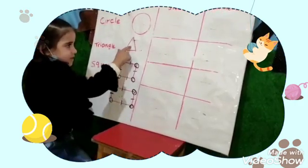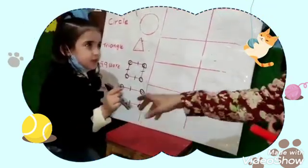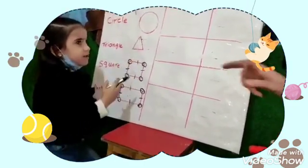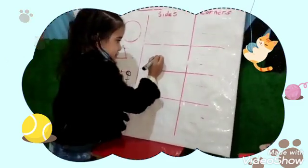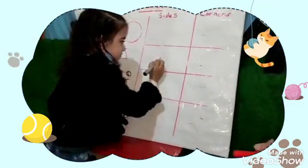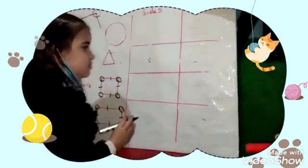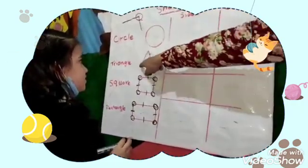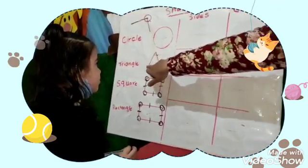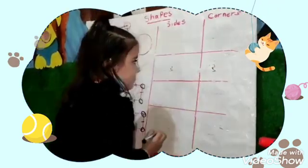Triangle — how many sides? Count the sides. One, two, three. More excellent. Let's write three. Three. How many corners? Count corners. One, two, three. Three corners. More excellent.